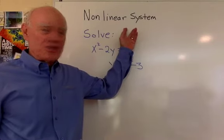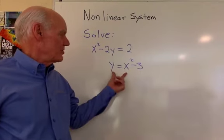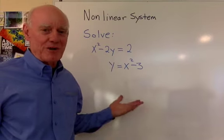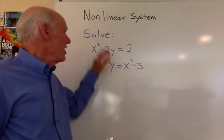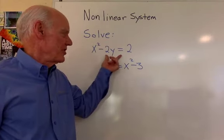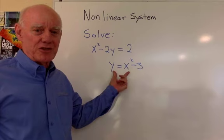This is a nonlinear system of equations. Looks like this right here. Both of these equations are not linear equations, so that's why we call it a nonlinear system. We want to solve this system, so we want to find all the ordered pairs that satisfy both equations.